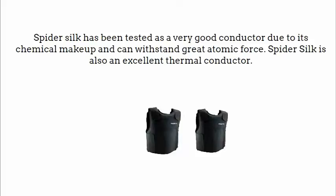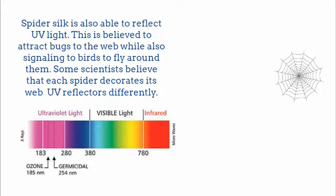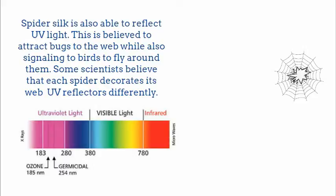Spider silk has been tested as a very good conductor due to its chemical makeup and can withstand great atomic force. Spider silk is also an excellent thermal conductor and is able to reflect UV light. This is believed to attract bugs to the web while also signaling to birds to fly around them. Some scientists believe that each spider decorates its web with UV reflectors differently.